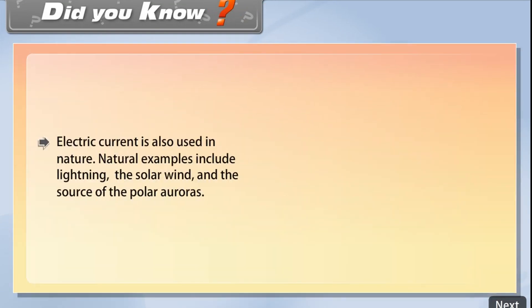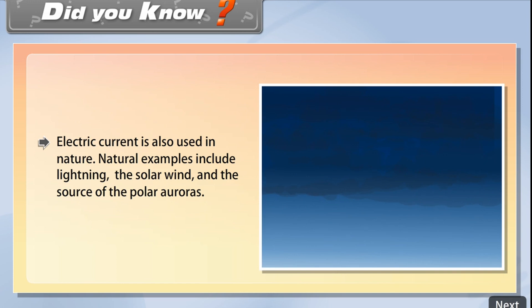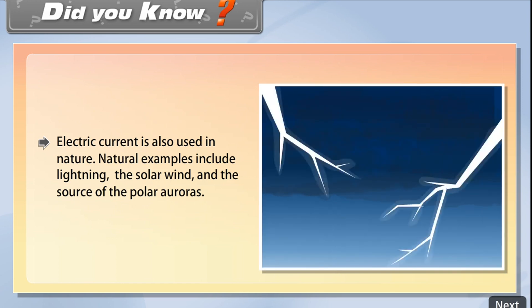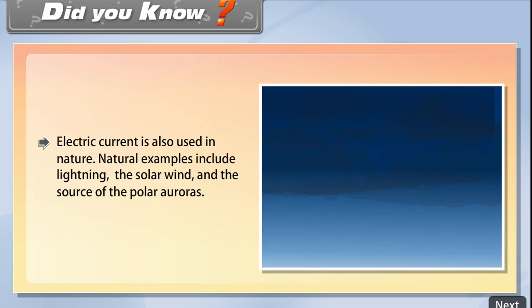Electric current is also used in nature. Natural examples include lightning, the solar wind, and the sources of the polar auroras.